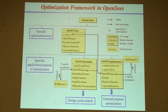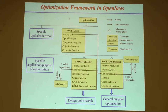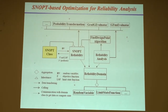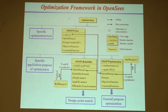In standalone optimization we talk about design variables, but in reliability analysis the design variables are random variables. The constraint function in standalone optimization is called the limit state function in reliability analysis. We focused first on the reliability application, since OpenSees already had a module for reliability analysis developed by Professor Der Kiureghian and his PhD student Haukaas, who is now a professor in Canada.